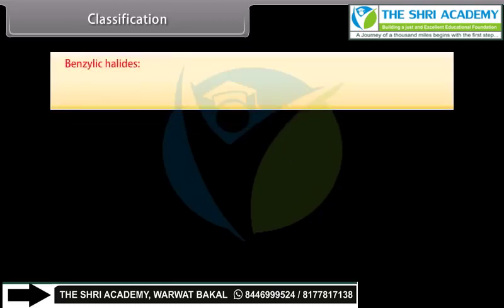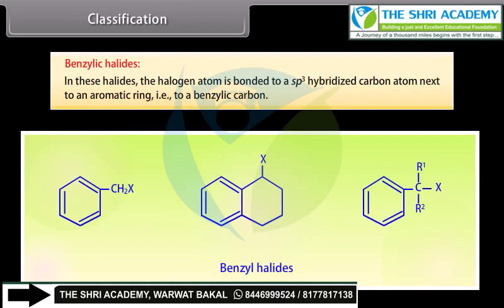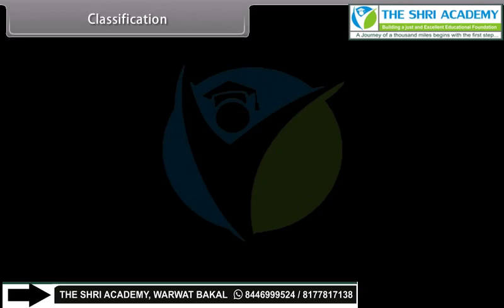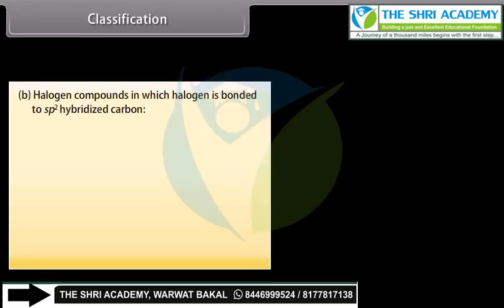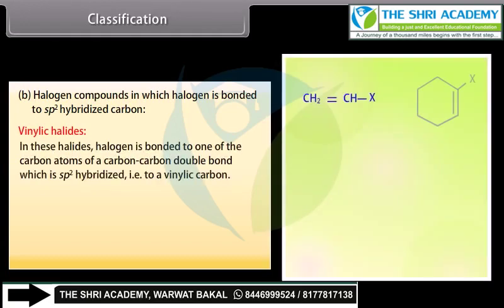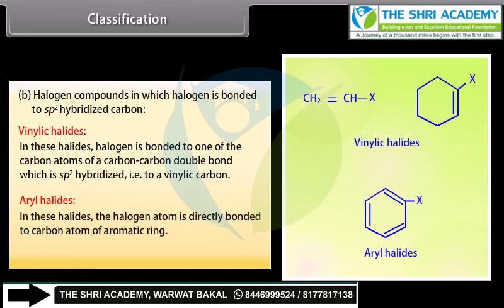Benzylic halides: in these halides, the halogen atom is bonded to a sp3 hybridized carbon atom next to an aromatic ring — that is, to a benzylic carbon. Aryl halides: in these halides, the halogen atom is directly bonded to a carbon atom of the aromatic ring. For example, halobenzene.